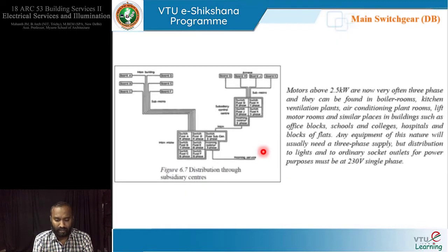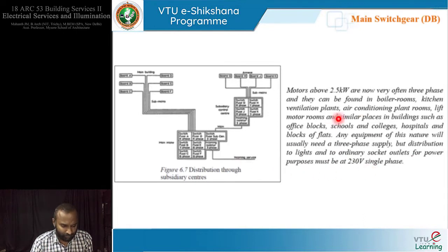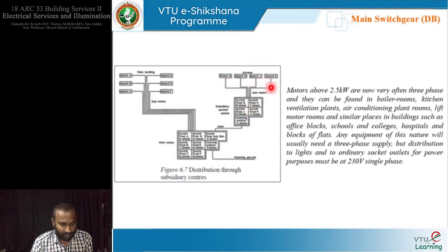Moving on further, motors above 2.5 kilowatts are now very often three-phase, because of the complexity and capacity they handle. They can be found in boiler rooms, kitchen installation plants, and huge installations. Any equipment of this nature will need a three-phase supply. This is the main building and annex building, all coming to the facility which is the distribution center. From the topmost cabinet it goes to a subsidiary distribution center, which handles other spaces under the annex building.